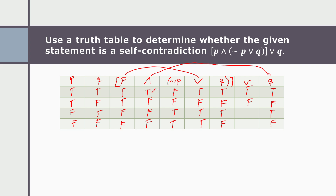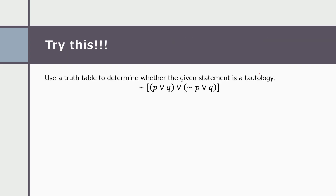Taking the disjunction of both sides: true and true is true; false and false is false; false and true is true; false and false is false. So the final results are: true, false, true, false. Therefore, this is not a self-contradiction, because the results are not always false — there are some true and some false statements. Try answering this using a truth table at home. Okay, thank you so much for listening.